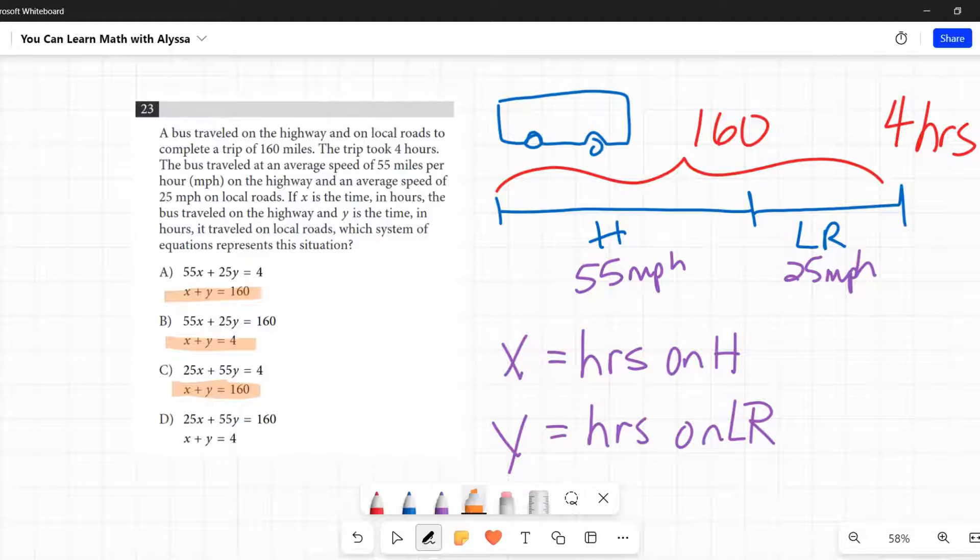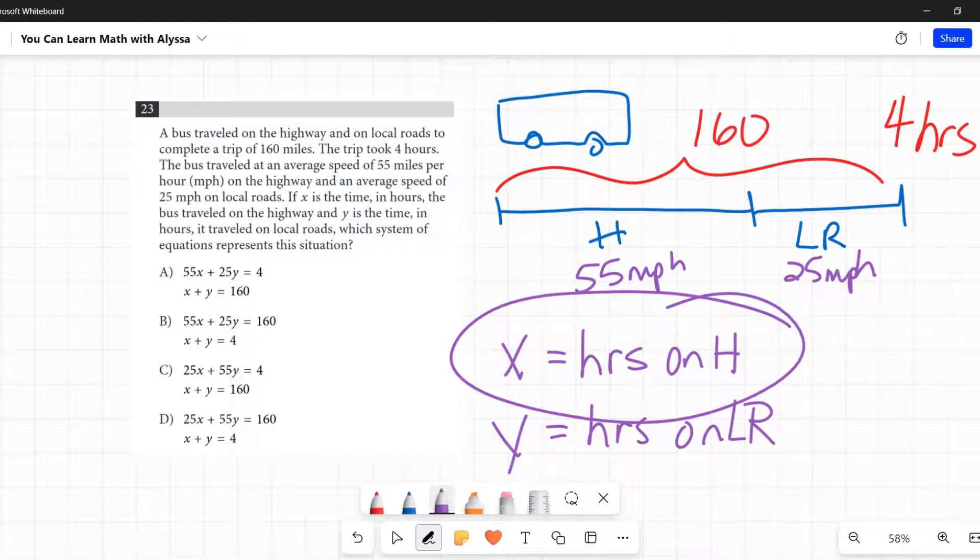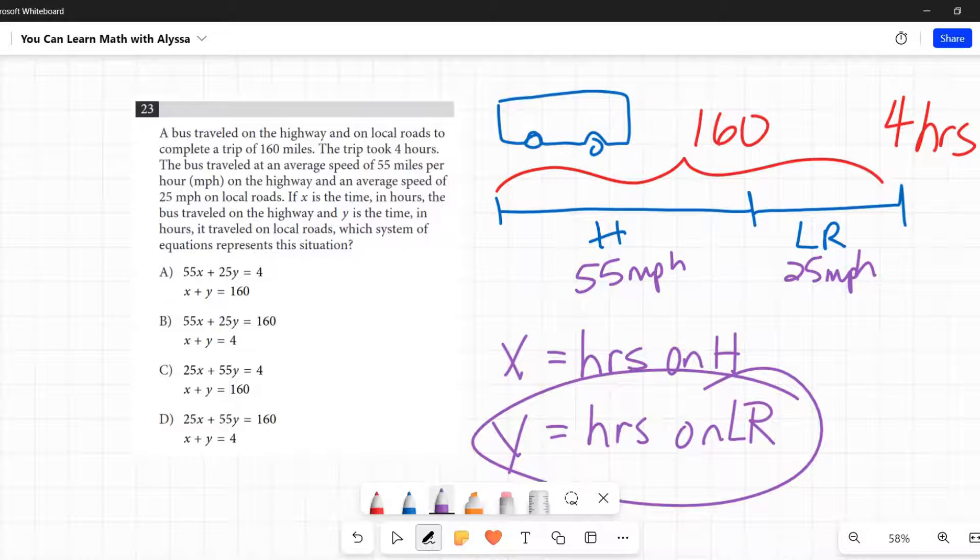That seems simpler of the two, so I'm going to start with that. X plus y, what would x plus y equal? X is the hours on the highway, y is the hours on the local roads. So together, the total hours that bus drove was four hours. The hours on the highway plus the hours on the local road would be four hours total.